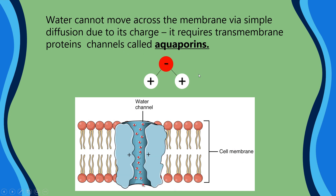Examples of substances that cannot get across the membrane via simple diffusion include water. Water has a positive charge on the hydrogen and a negative charge on the oxygen — water is what we call a dipole, meaning two poles, with a positive and negative charge. That prevents it from getting across the phospholipids directly, meaning it requires a specific transmembrane protein known as an aquaporin — 'aqua' meaning water, 'pore' like the pores in your face, little holes. This water channel allows water to move across the membrane without going through the phospholipids.